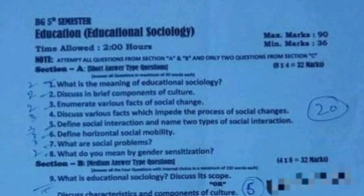Section A: short answer type questions. Answer all questions in a maximum of 20 words each. 8 into 4 is equal to 32 marks.